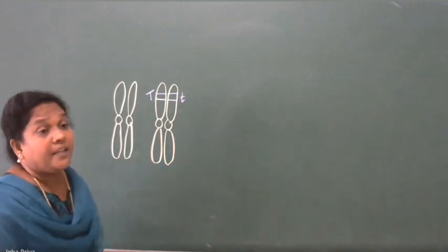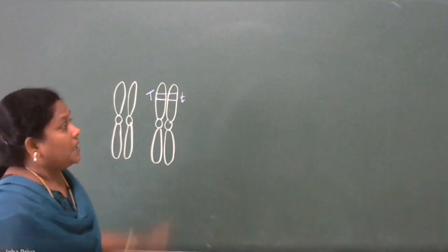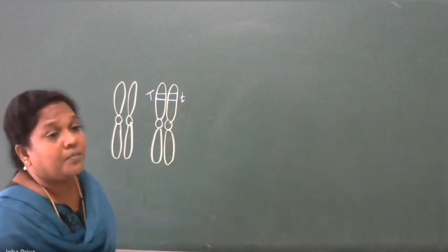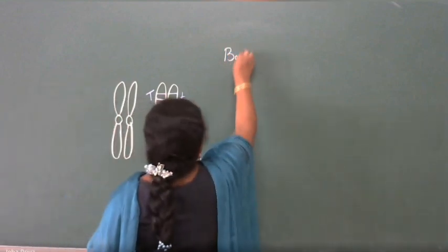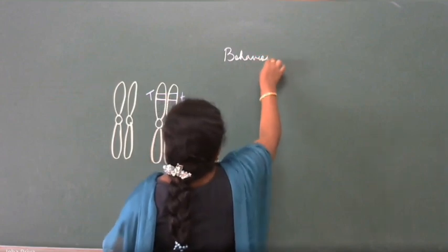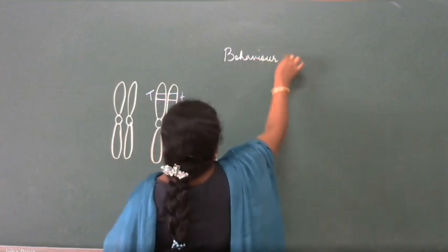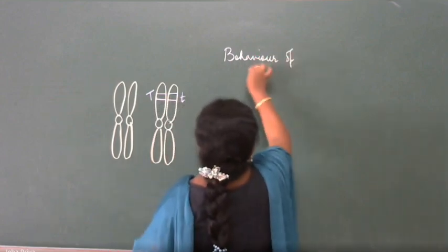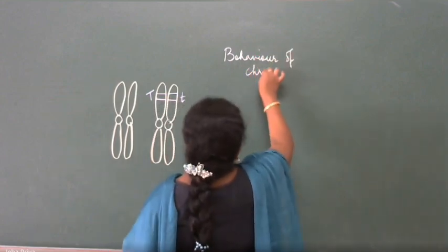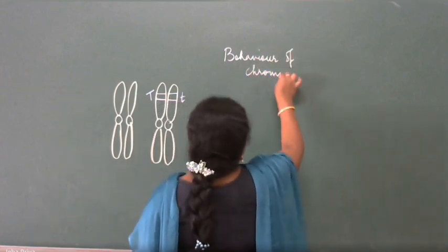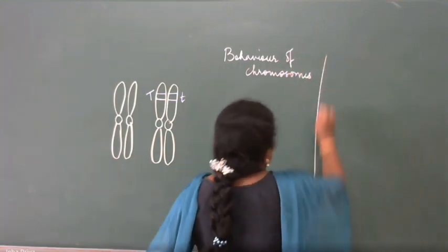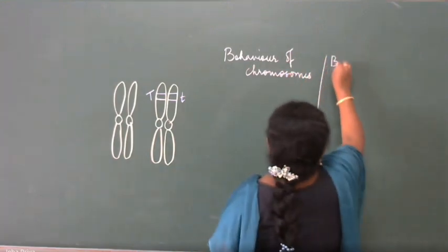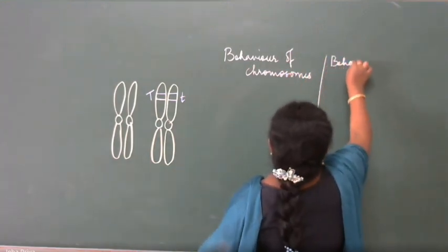Here, one is the behavior of the chromosome, the other one is the behavior of the genes. So I will write it here: A is behavior of chromosome, and B is behavior of genes.